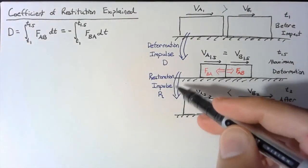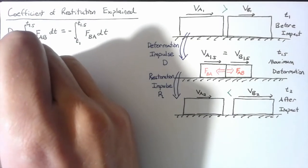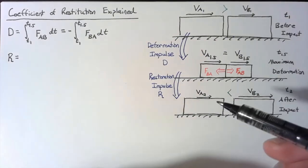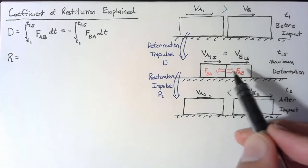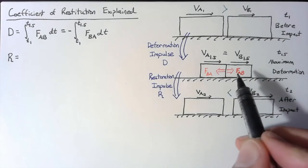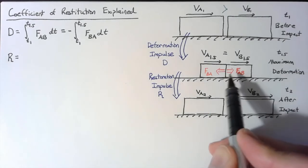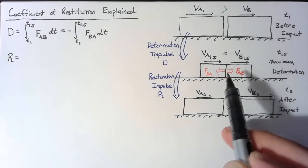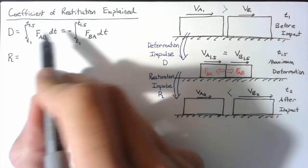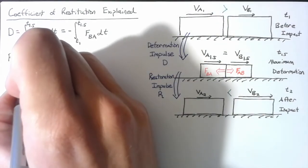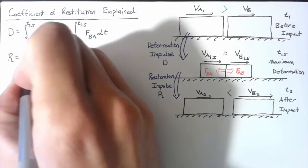Now let's write out the restoration impulse. It looks very similar to the deformation impulse, except we integrate from time 1.5 up to time 2. As these things are being pushed together, the force of A acting on B is positive, and as they're being pushed apart, the force of A acting on B is still positive — it's still pushing B forward. Likewise, throughout the entire time, B is pushing A backward. So we only need to change the limits of integration — integrating from T1.5 up to T2.